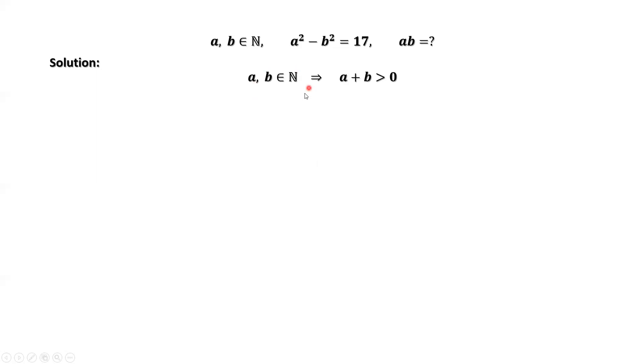This is the given condition. A and B are positive integers. This implies A plus B is bigger than zero. This is the given equation. A squared minus B squared equals 17. We factor the left-hand side. Then we have A minus B times A plus B equals 17.